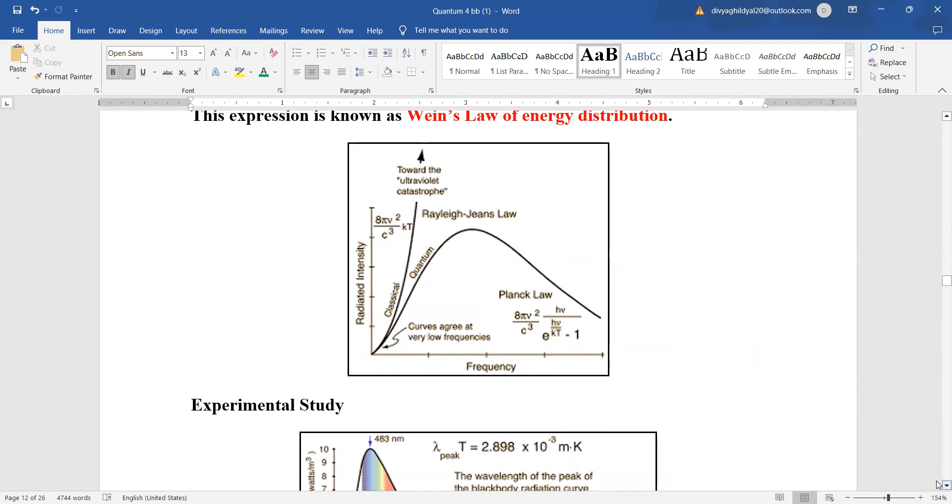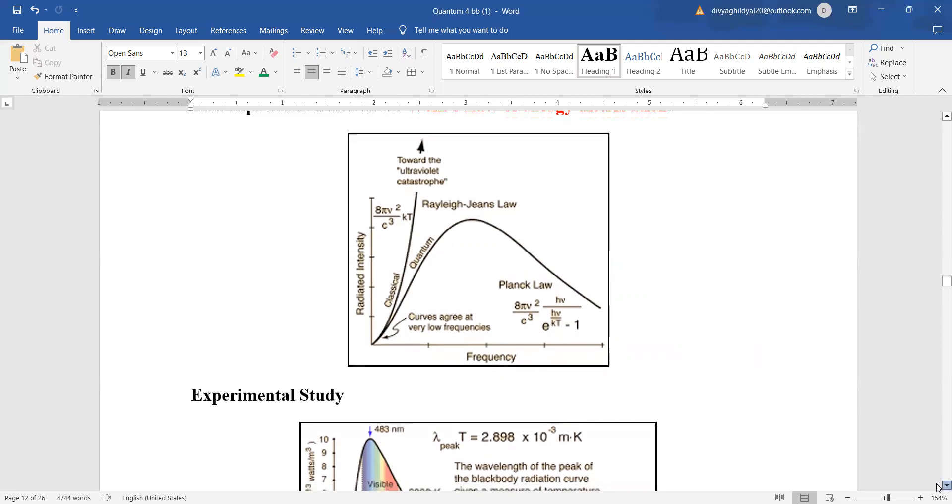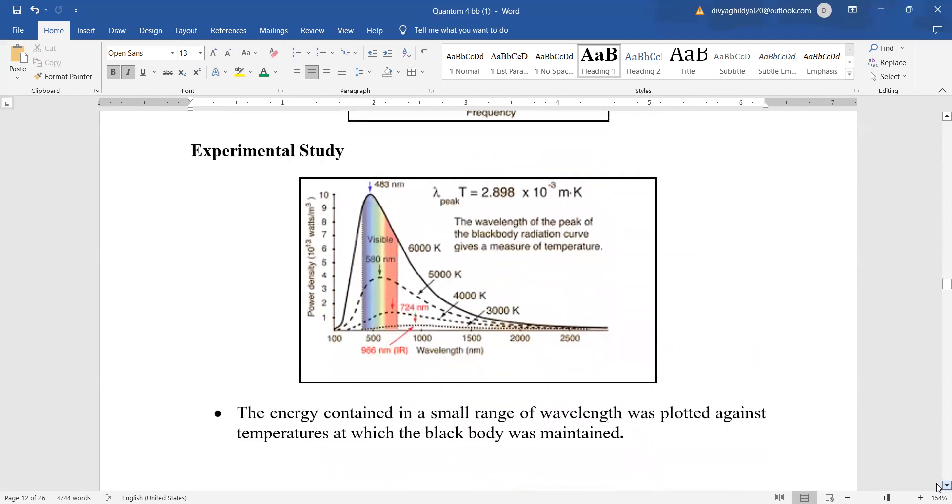Now spectral distribution. This is what your question is in the exam. You have to draw this plot. Now first see the x axis of this plot is consisting of the wavelengths and power density or the energy is on this axis. Now you notice lambda m into t equal to lambda m into t equal to a constant as per Wayne's displacement law.